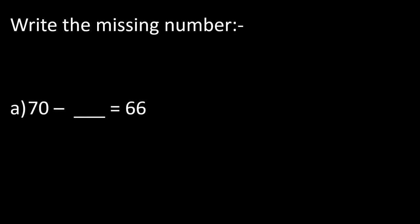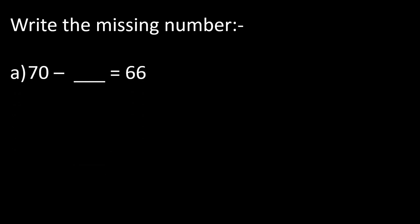Write the missing numbers. In part A: 70 minus dash is equal to 66. Keep 70 in mind and count backward until 66, opening your fingers: 69, 68, 67, 66. How many fingers opened? That is 4, so we write 4 here.